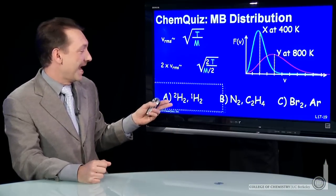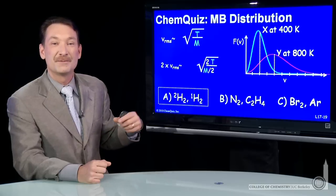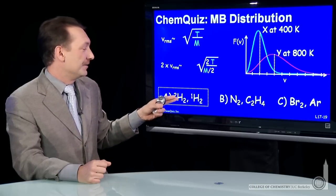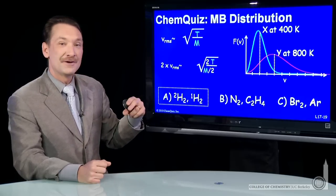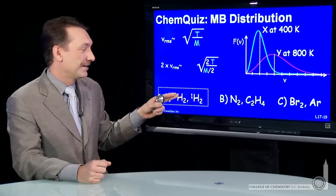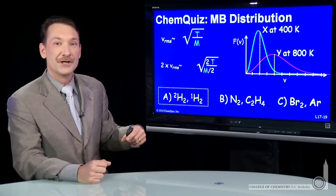So the correct answer here is A, twice the mass between the two particles, deuterium particles and hydrogen particles, the diatomic molecules, deuterium and hydrogen.